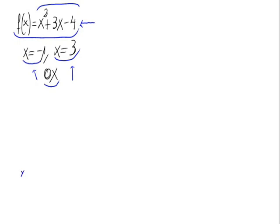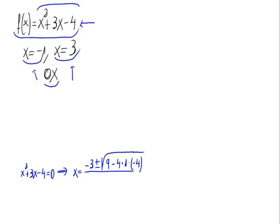For this, let's make the function equal to 0: x² + 3x - 4 = 0. As it is a second degree equation, applying the quadratic formula: (-3 ± √(3² - 4·1·(-4))) / (2·1), which gives (-3 ± √25) / 2 = (-3 ± 5) / 2. So the answers are (-3 + 5)/2 and (-3 - 5)/2.